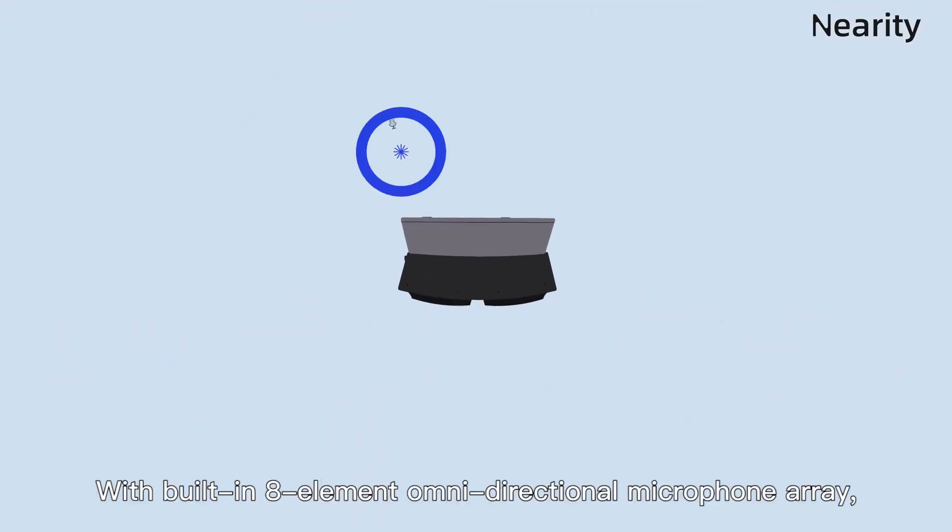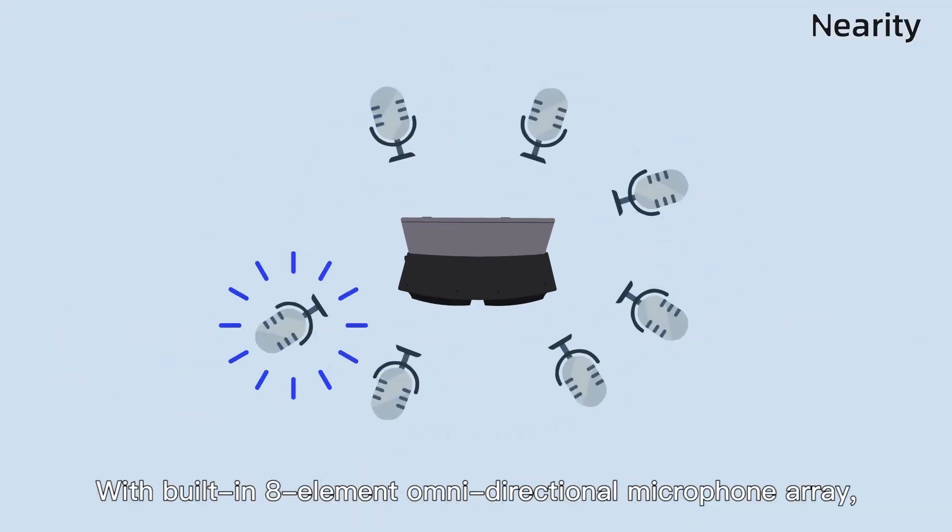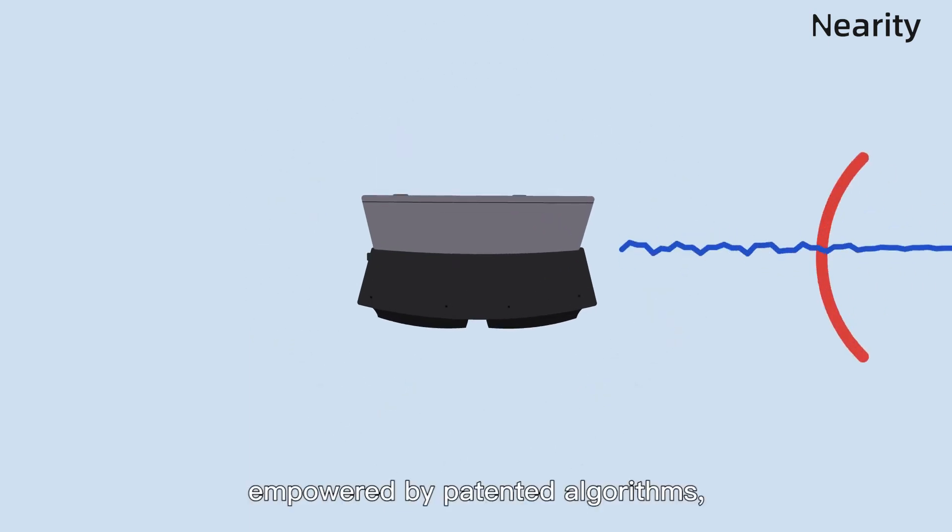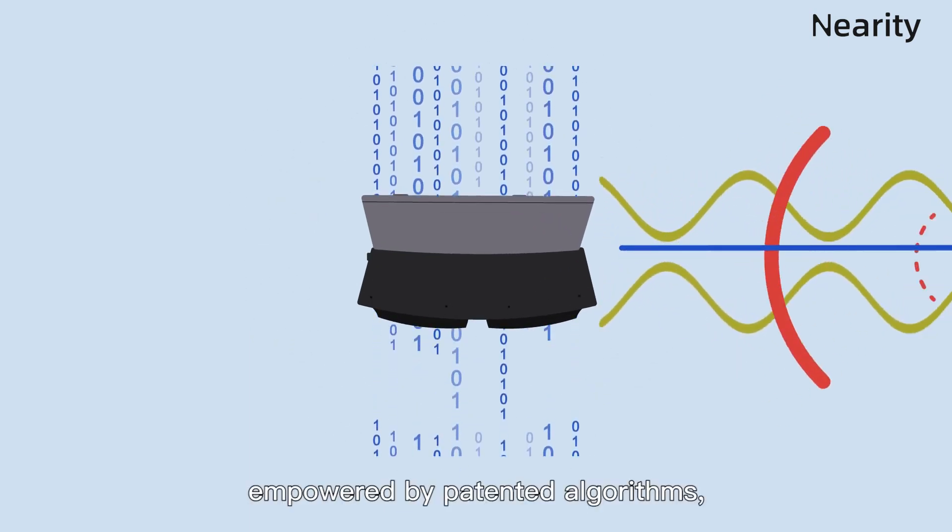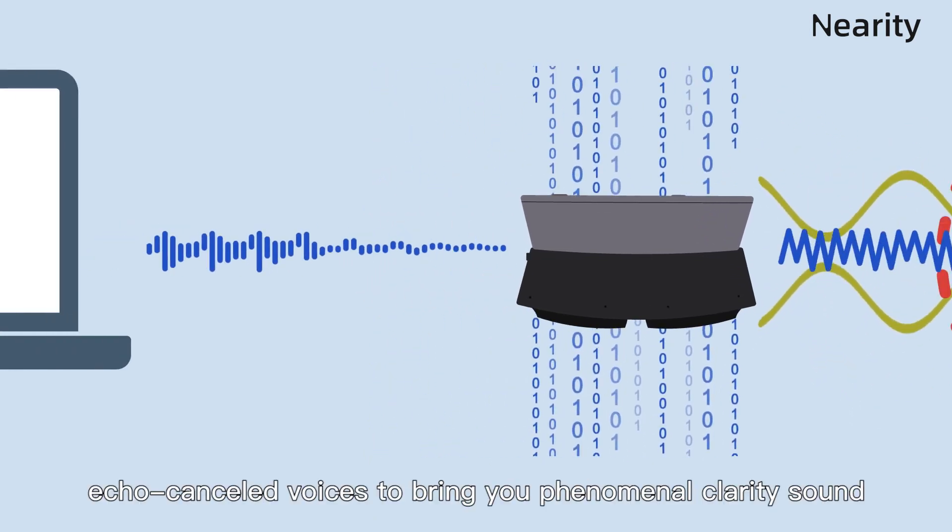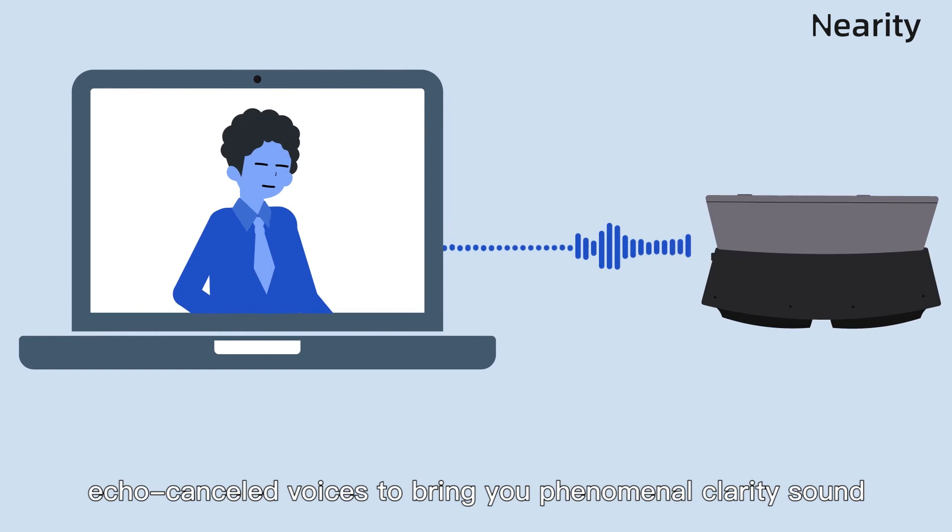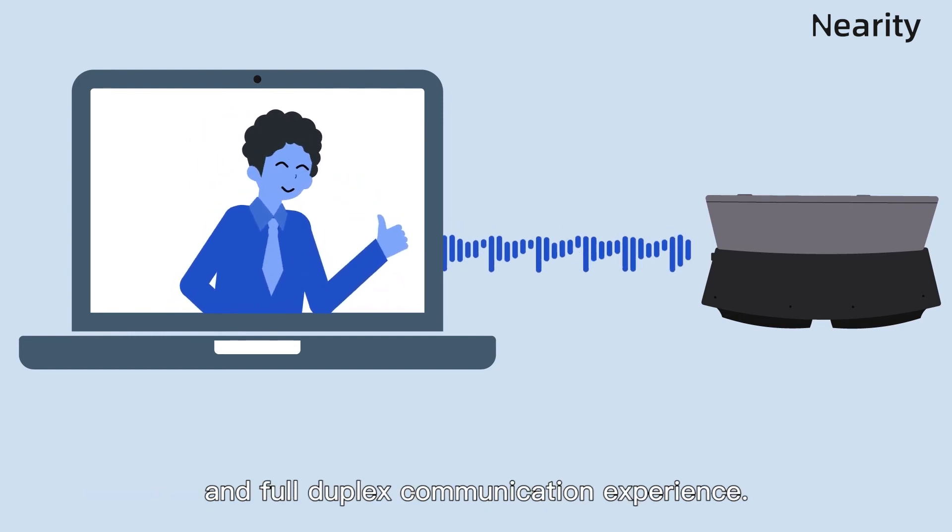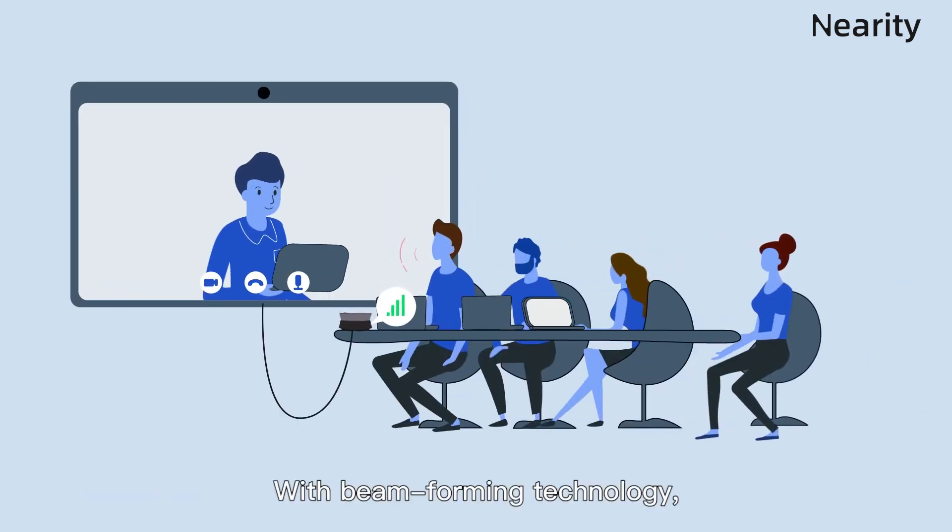With a built-in 8-element omnidirectional microphone array, the Nearity A20 is empowered by patented algorithms and can intelligently pick up noise-filtered, echo-canceled voices, bringing you phenomenal sound clarity and full-duplex communication experience.